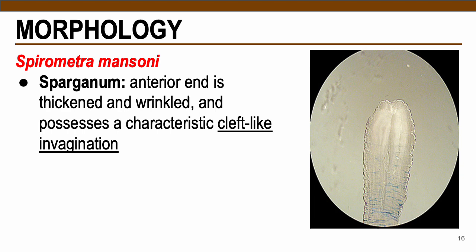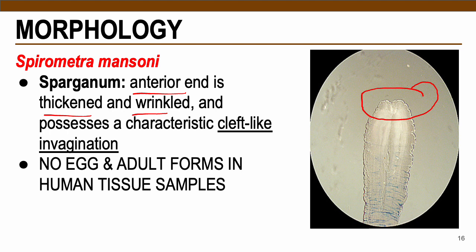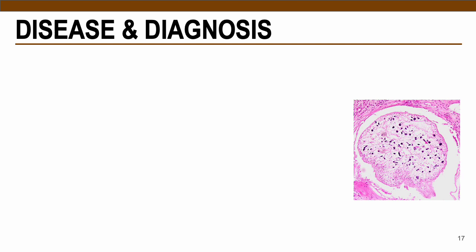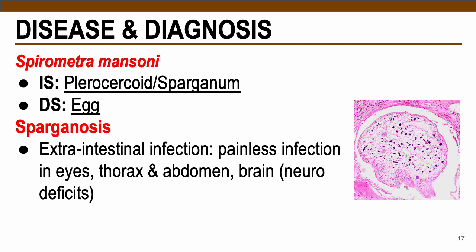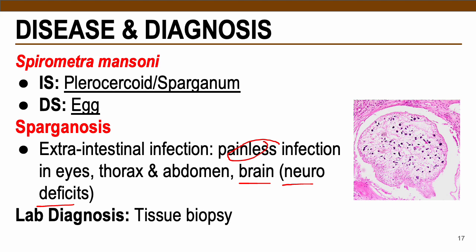For Spirometra morphology, the sparganum or plerocercoid contains an anterior end that is thickened and wrinkled, usually with a cleft-like invagination. Since humans are accidental hosts, we do not harbor the egg and adult forms. The disease caused is sparganosis — an extra-intestinal infection that is usually painless, but can be dislodged in the brain causing neuro-deficits. The only diagnosis is through tissue biopsy.